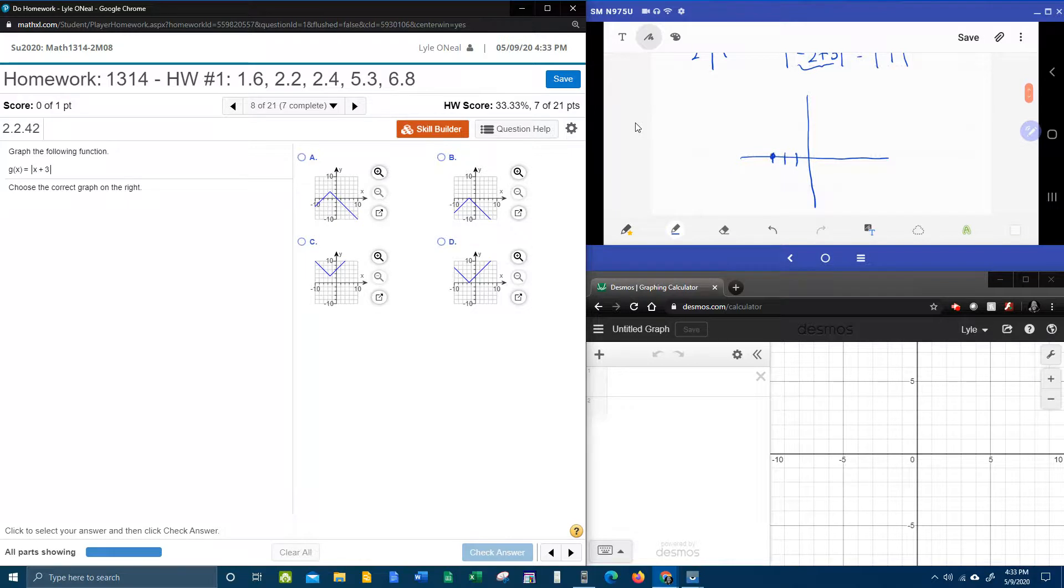That means at negative three, I'm not going to go up or down any. At negative two and negative four, I'm going to be at a height of one.